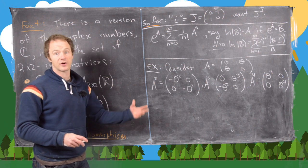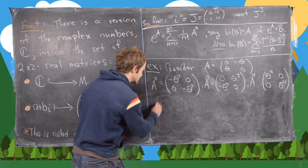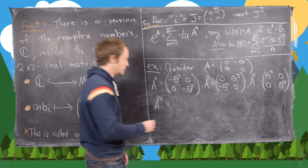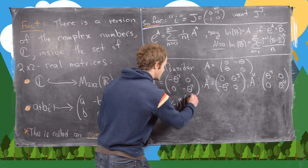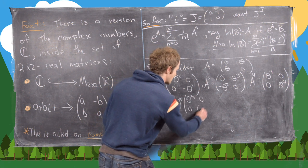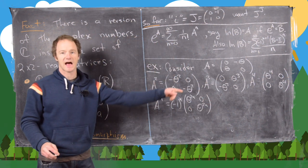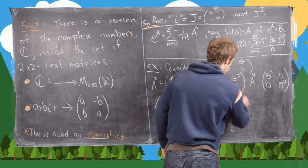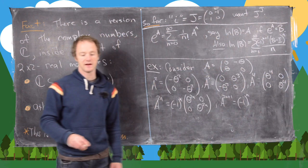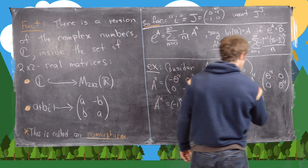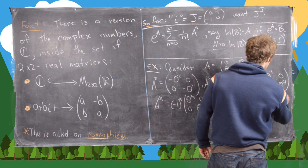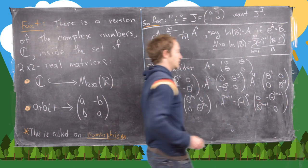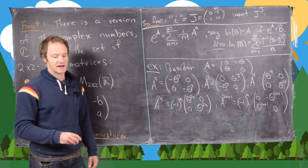We can prove by induction that for even powers: A_θ^(2n) = (-1)^n · [θ^(2n), 0; 0, θ^(2n)], a diagonal matrix. For odd powers: A_θ^(2n+1) = (-1)^n · [0, -θ^(2n+1); θ^(2n+1), 0], with zeros on the diagonal and non-zeros off the diagonal.